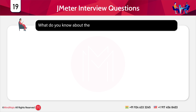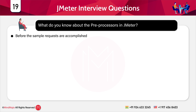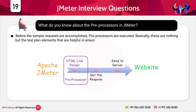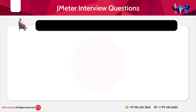The next question is: what do you know about pre-processors in JMeter? Before sampler requests are accomplished, pre-processors are executed. They are test plan elements that are helpful in ensuring reliability. Some widely used pre-processors in JMeter are: Regex Extractor, Bean Shell, URL Rewriting Modifier, and HTML Link Parser.